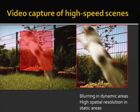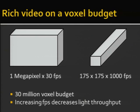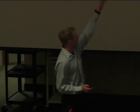This is not very nice. However, in areas where nothing moved, in static portions of my scene, I have a really nice high spatial resolution. I have 30 million voxels that I can use any way I want. One way is a high spatial resolution image at 30 frames per second, but if I want a high-speed camera at 1,000 frames per second, my spatial resolution suffers, and as I increase frames per second, I have light throughput issues.